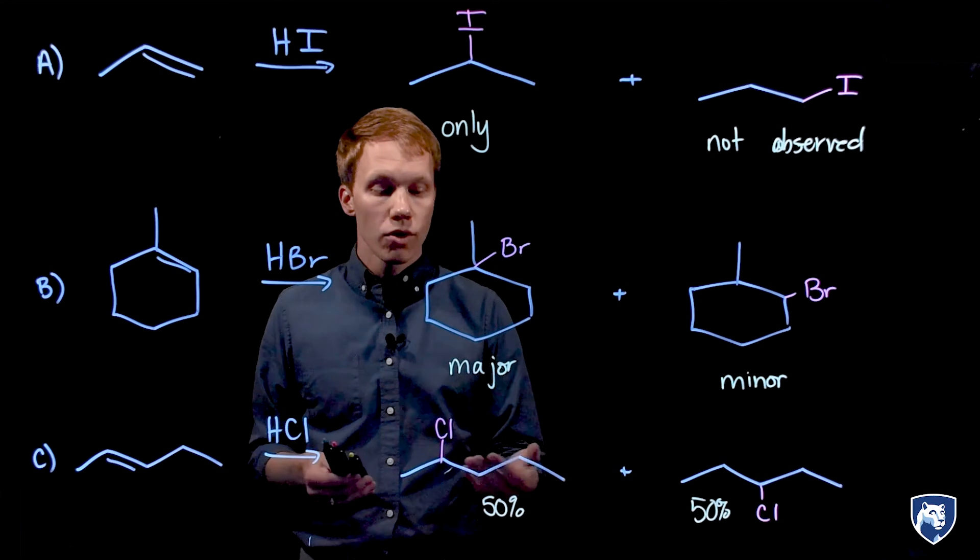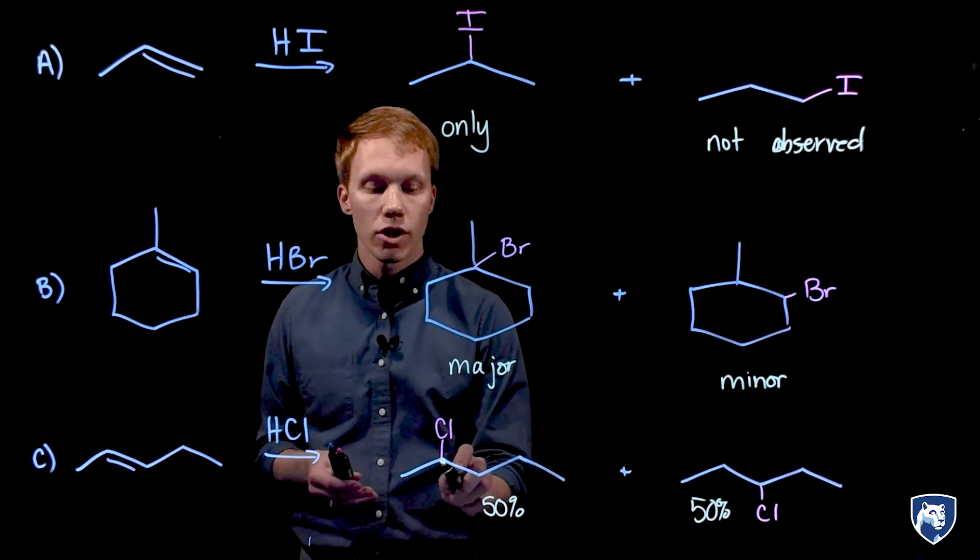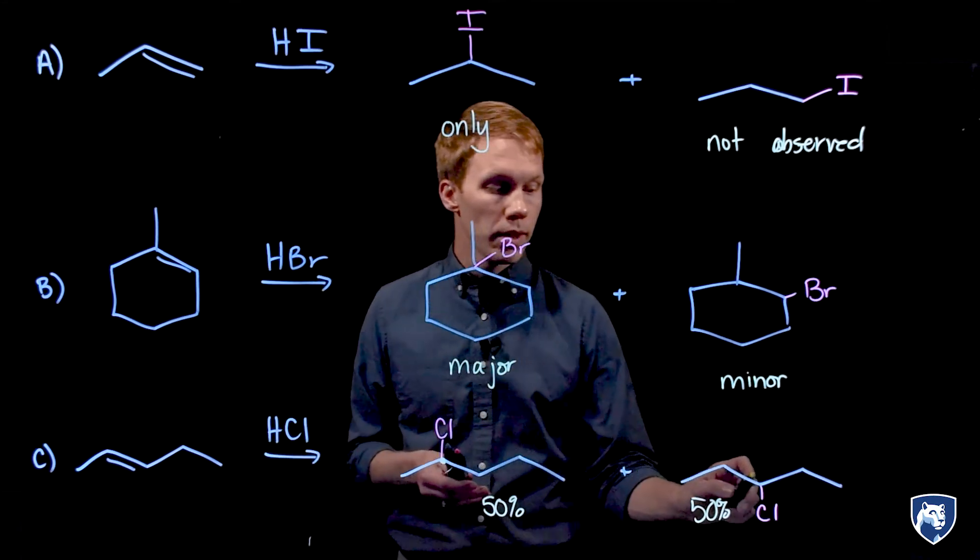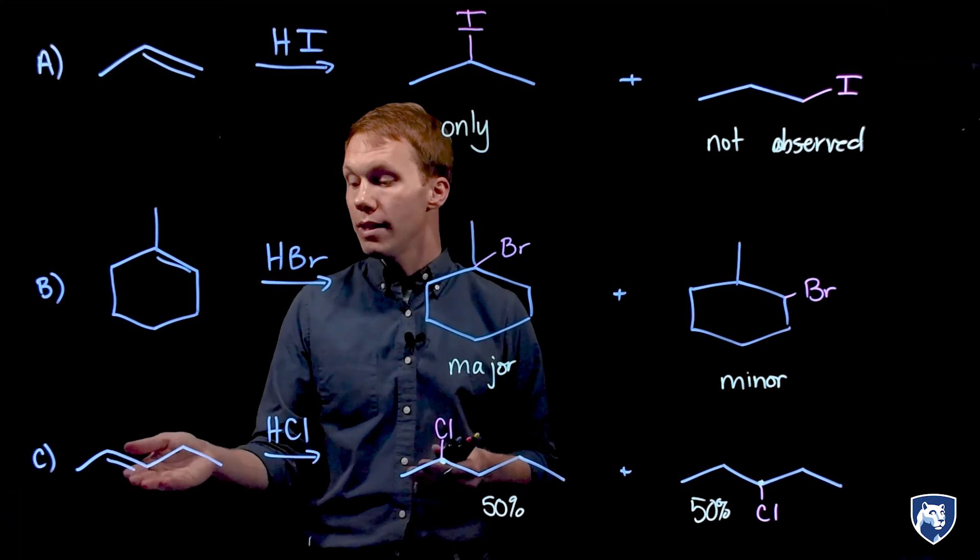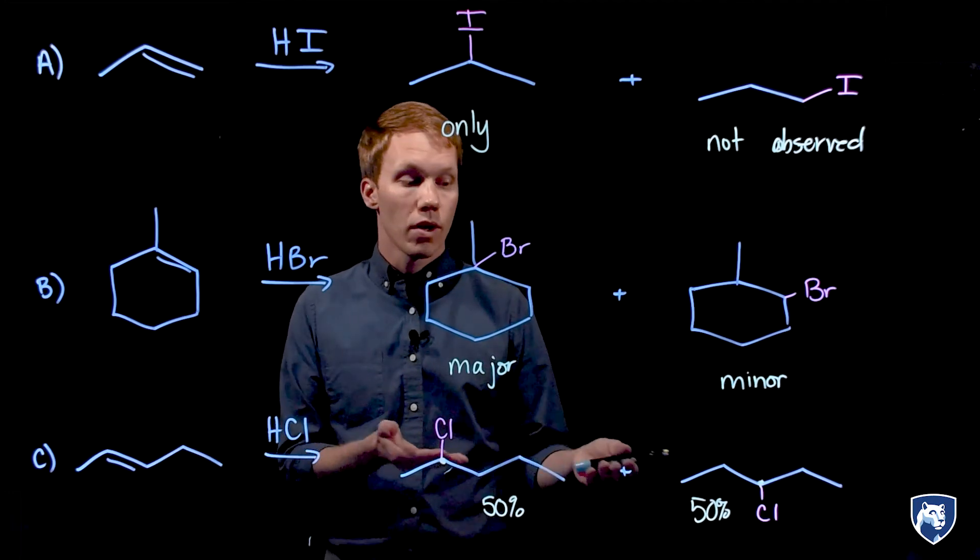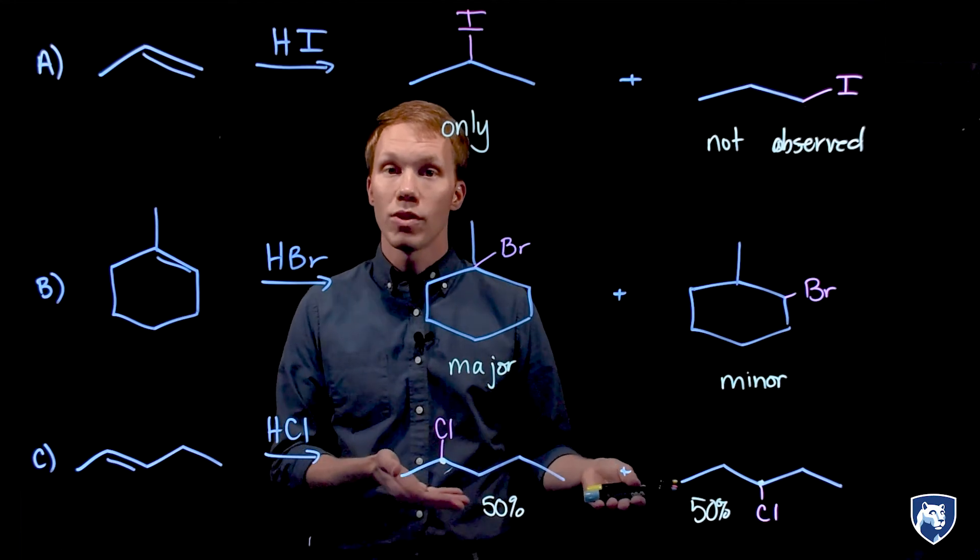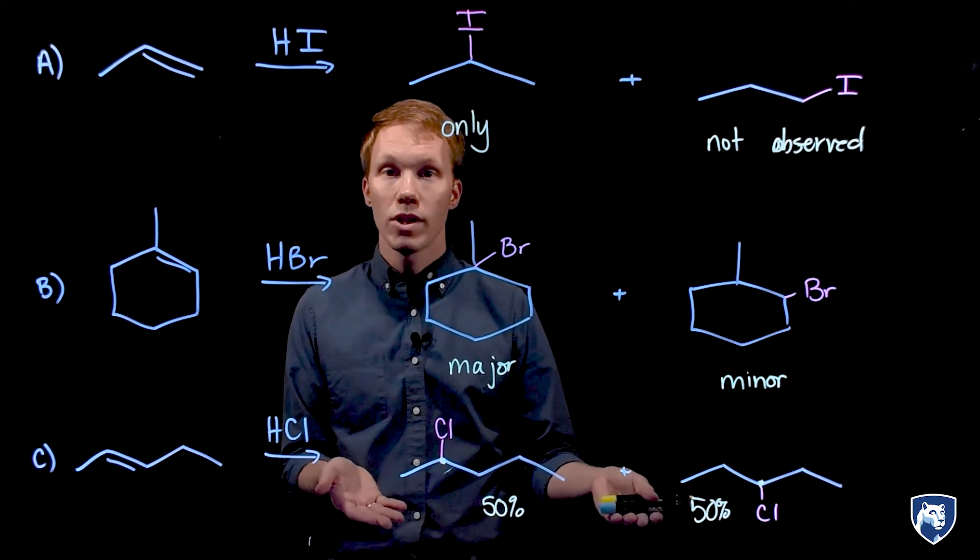If we look at the structure, we can see why this might be. Both of these halogens are secondary. We have two alkyl groups substituted at each of those positions. So there's no difference in the two ends of the double bond, so the probability results in an equal mixture of these two constitutional isomers. Could we classify reaction C as regioselective?